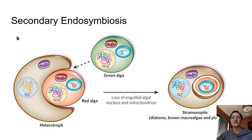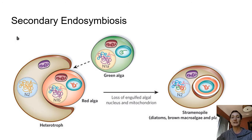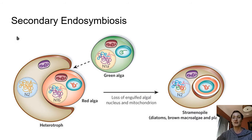This has happened many times throughout the course of evolution for photosynthetic organisms. Most photosynthetic organisms aren't related to each other, but at one point in history they engulfed a red algae, a green algae, or a cyanobacterium.